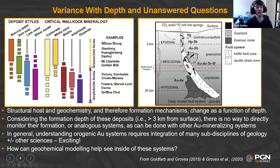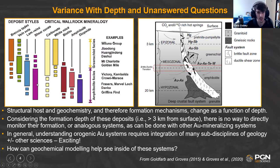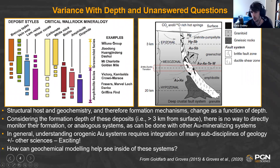Orogenic gold deposits are really fun and interesting. There is variance with depth. Looking at deposit style and critical wall rock mineralogy, at shallower levels we see that breccias and vein sets are important, and carbonate and white mica are critical wall rock mineralogy. As you go deeper, the structural host goes into laminated veins and shear veins, and you start to look at more diopside, amphibole, and biotite being important. There's terminology for epizonal, mesozonal, and hypozonal orogenic deposits — they change as a function of depth, mineralogy, and formation mechanism.